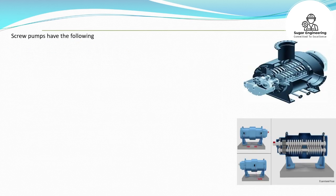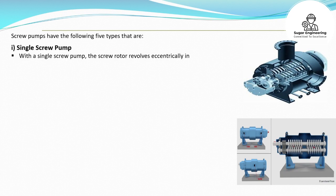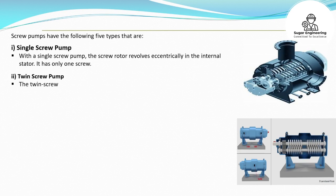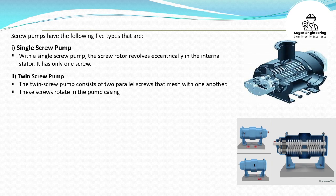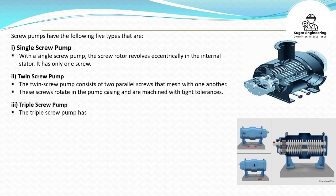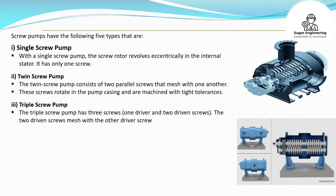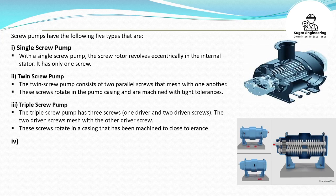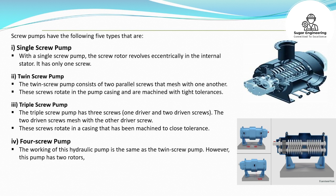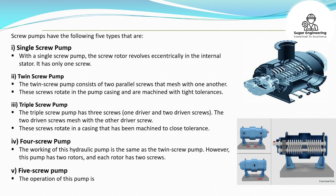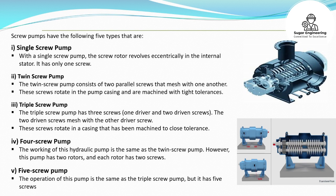Screw pumps have the following five types. 1. Single Screw Pump: the screw rotor revolves eccentrically in the internal stator and it has only one screw. 2. Twin Screw Pump: consists of two parallel screws that mesh with one another, rotating in the pump casing with tight tolerances. 3. Triple Screw Pump: has three screws — one driver and two driven screws — where the two driven screws mesh with the driver screw. 4. Four Screw Pump: works the same as the twin screw pump but has two rotors, each with two screws. 5. Five Screw Pump: operates the same as the triple screw pump but has five screws.